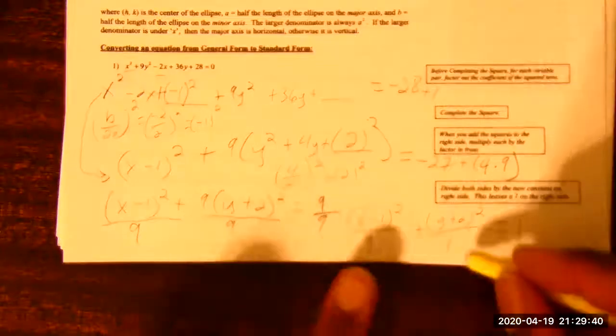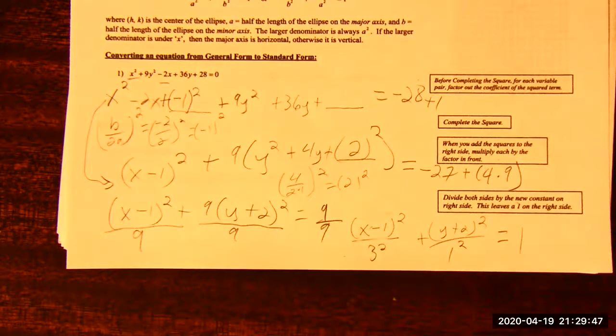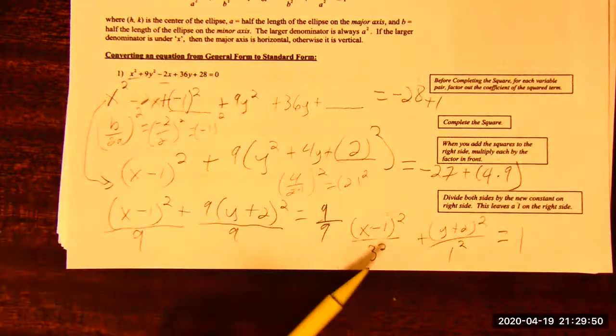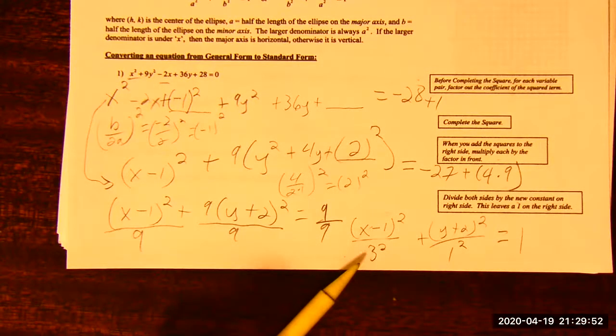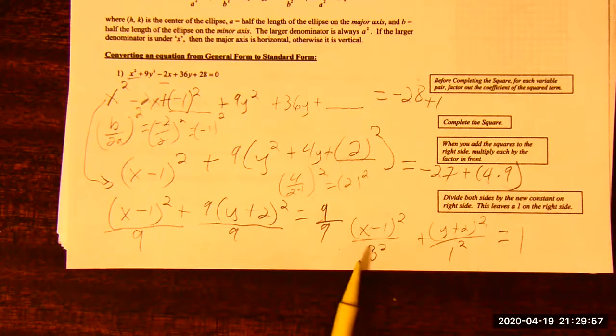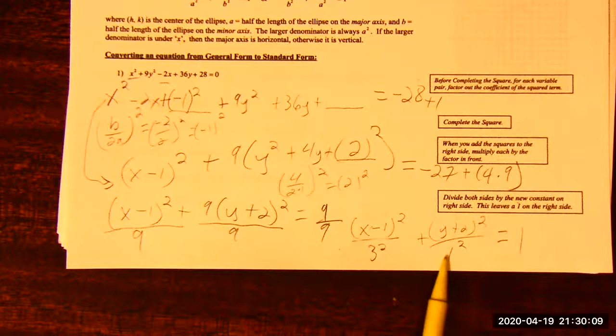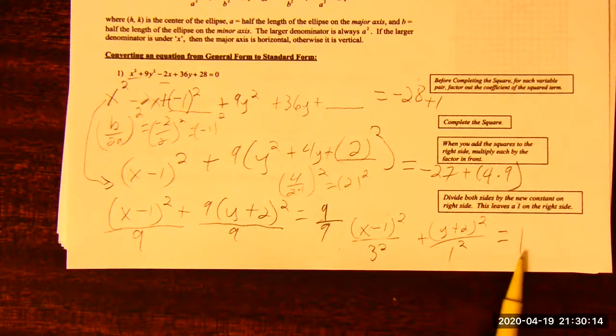So because we factored out a 9 here, so we can complete the square inside. Whatever we would be adding that b over 2 squared to both sides, that has to be multiplied by this 9. So we're left with x minus 1 squared plus 9 times y plus 2 squared equals negative 27 plus 4 times 9 is 36. And we get 9. A simple number. And we're still not done. Recall the standard form is set equal to 1. We want it set equal to 1 so we know what this a and b is so we can graph it.